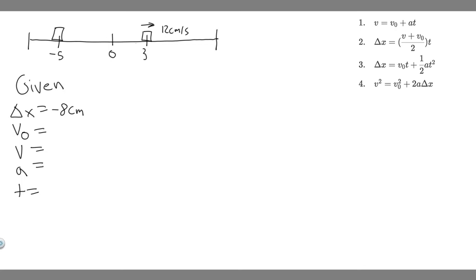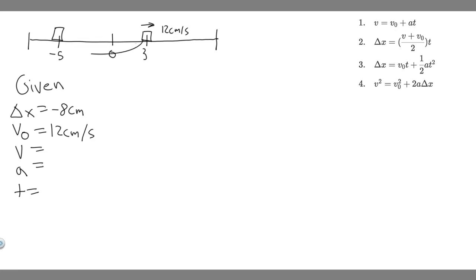v sub 0 is your initial velocity, or the initial speed you're traveling at. In this problem, our object in the beginning is going 12 centimeters per second in the positive direction, so its initial speed is positive 12 centimeters per second. v is its velocity at the end of this time interval — we actually don't know this because they don't tell us, so we mark it as unknown. And a, acceleration, is exactly what they're asking us for — also unknown, and that's what we're trying to solve for.